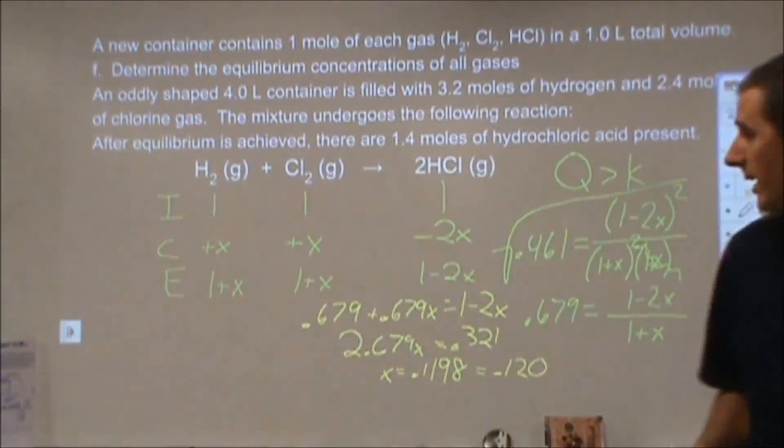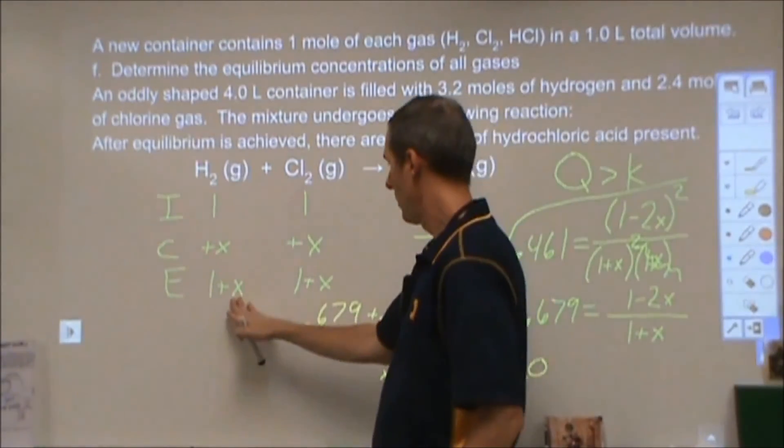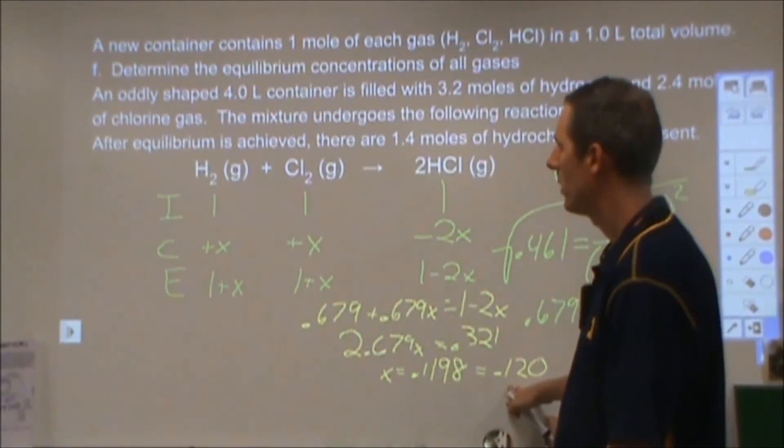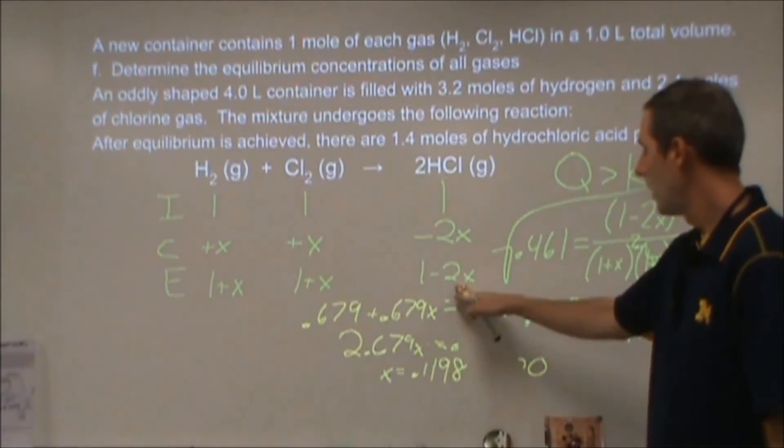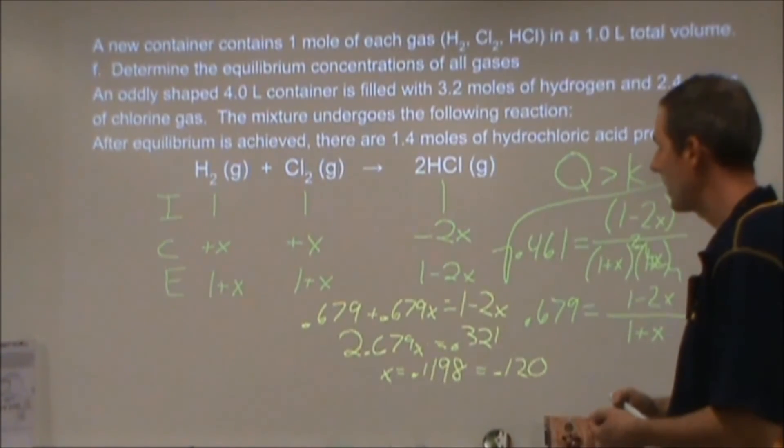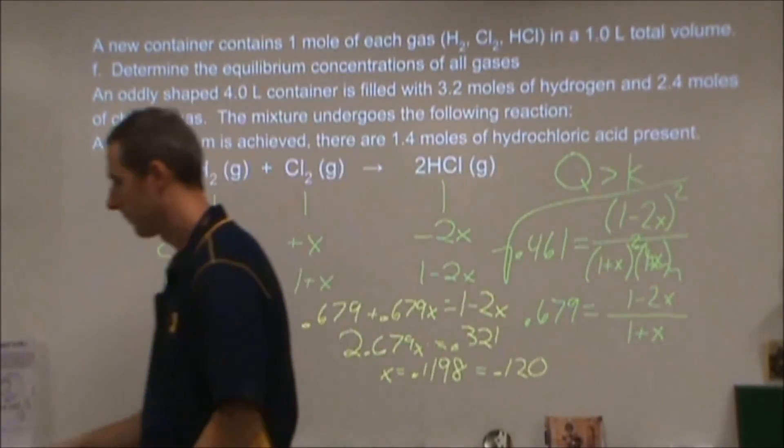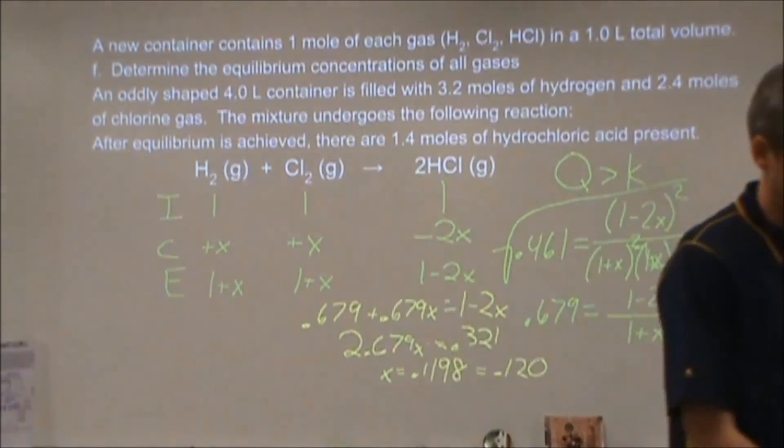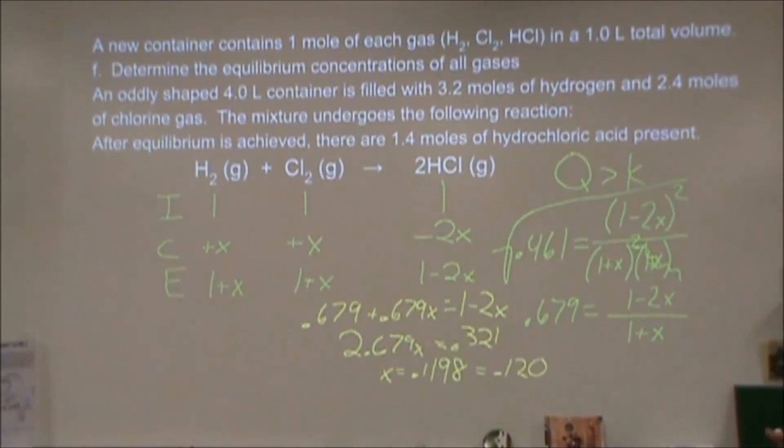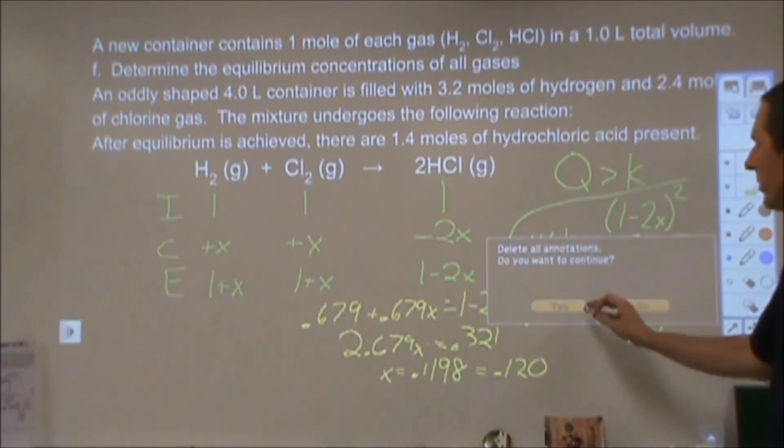So what that means is that at equilibrium I'm going to have 1 plus X or 1.120 of hydrogen, 1.120 of chlorine, and I'm going to have 1 minus 2X, so I'm going to have 0.76 of the hydrochloric acid. So it looks as though I'm missing the final part of this, but in part G it says construct a graph showing rate versus time and concentration versus time for this particular substance. So I need this 0.120 to be able to do that.